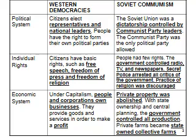Another big difference between Western democracies and Soviet communism has to do with economics. Under a capitalist system, people and corporations own businesses and provide goods and services in order to make a profit. This goes back to the Enlightenment — John Locke's idea that property is good and it's government's place to protect people's rights to own property. But this idea could not be more strongly opposed than it was in the Soviet Union. Private property of any kind would be abolished and replaced with state ownership and central planning. There was no such thing as private farming.